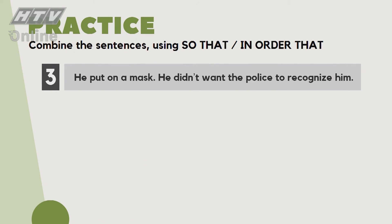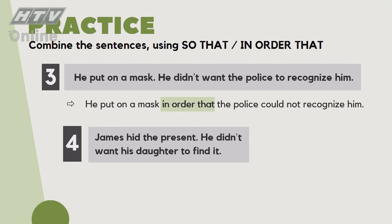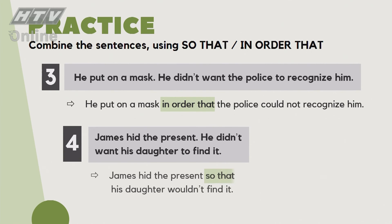Câu số 3: 'He put on a mask. He didn't want the police to recognize him.' Mục tiêu của việc đeo mặt nạ là để cảnh sát không nhìn ra. Đáp án: 'He put on a mask so that the police could not / would not recognize him.' Câu số 4: 'James hid the present. He didn't want his daughter to find it.' Anh James giấu quà Giáng sinh để con gái không tìm ra. Đáp án: 'James hid the present so that his daughter wouldn't find it.'